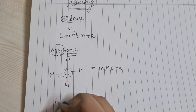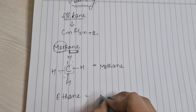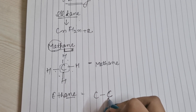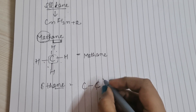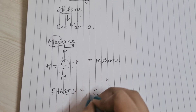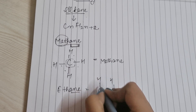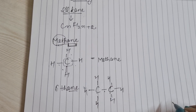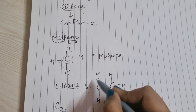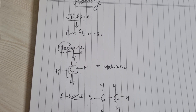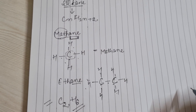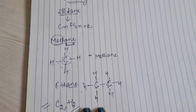Ethane के लिए: 'ith' मतलब 2 carbon, 'ane' मतलब single bond। एक carbon के पास 1 bond already है, तो 3 hydrogen और चाहिए। दोनों carbons पर 3-3 hydrogen लगाने पर C₂H₆ बनता है। Formula CnH(2n+2) में n=2 डालने पर C₂H₆ आता है — यह verify हो गया।